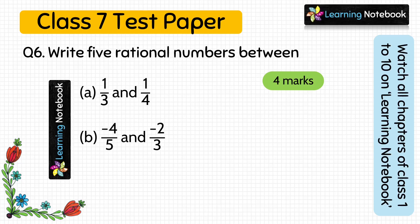Write 5 rational numbers between the given values. This question is from the chapter rational numbers and has 2 parts. We have to write 5 rational numbers between the given rational numbers. This question is of 4 marks.